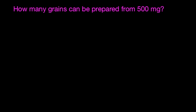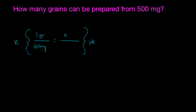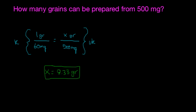The third problem: how many grains can be prepared from 500 milligrams? So what's the question asking for? They want to know how many grains — so our final answer needs to be grains. If we set it up again, we know that one grain has 60 milligrams, and we want to know how many grains are in 500 milligrams. Cross multiply and divide, and x equals 8.33 grains. If we have 500 milligrams, that is also the same as 8.33 grains.